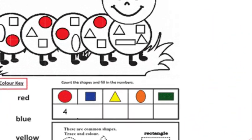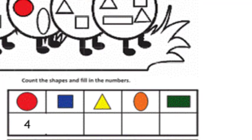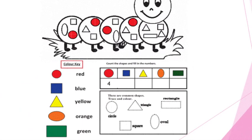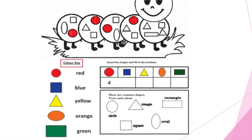Now let's count the shapes and fill in the numbers. Circles: count 1, 2, 3, 4 — so 4 is written. Squares: count 1, 2, 3, 4, 5 — we have 5 squares. Triangles: count 1, 2, 3, 4. Ovals: count 1, 2. Rectangle: there is only one rectangle.